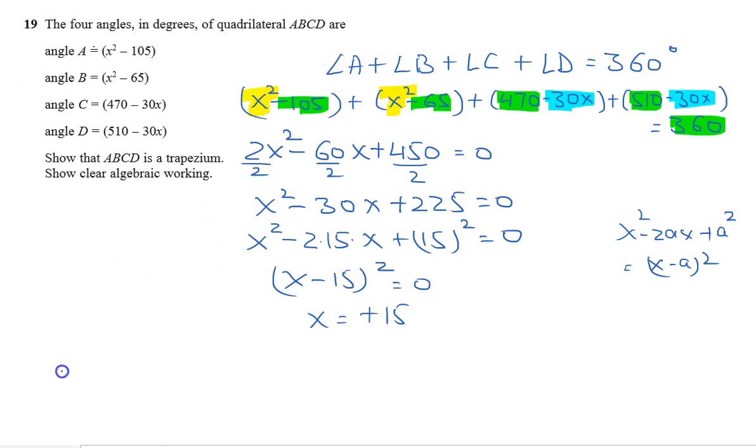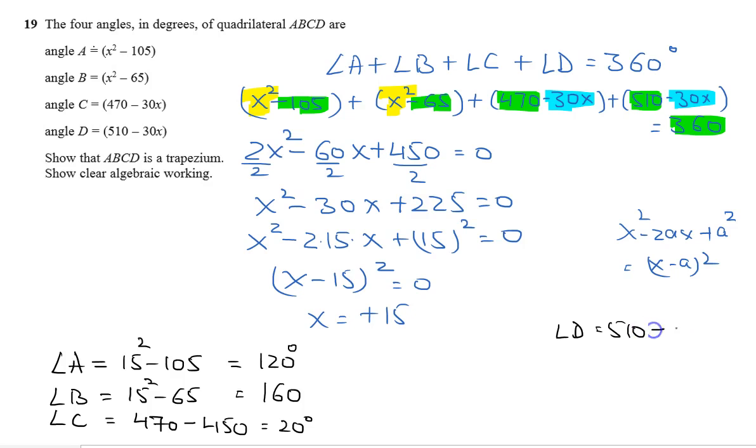So now if x is 15, angle A will be 15 square minus 105, that is 120. Angle B will be 15 square minus 65, that is 160. Angle C will be 470 minus 30 times 15, which is 450, that is 20 degrees. And angle D will be 510 minus 450, which equals 60 degrees.